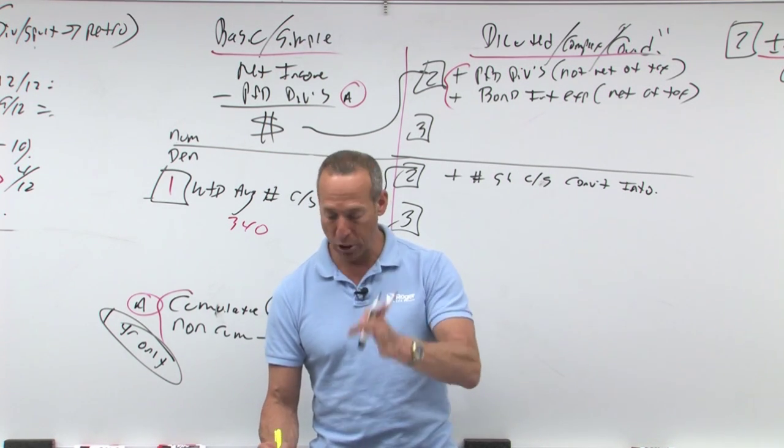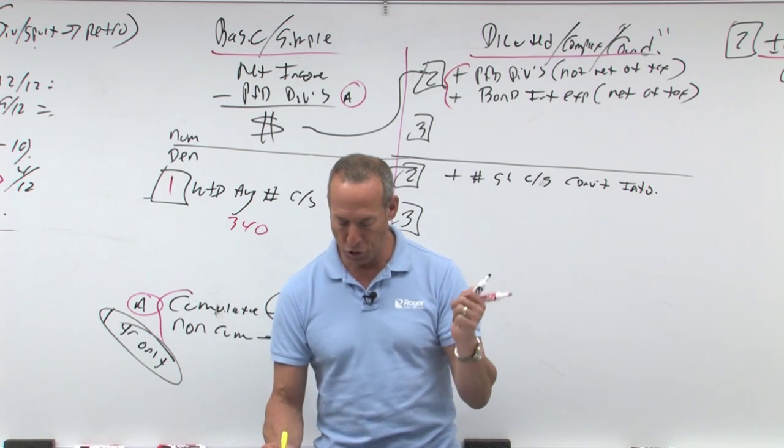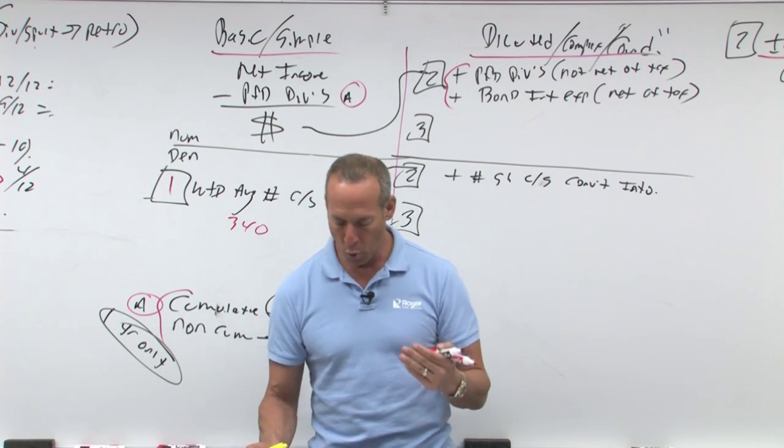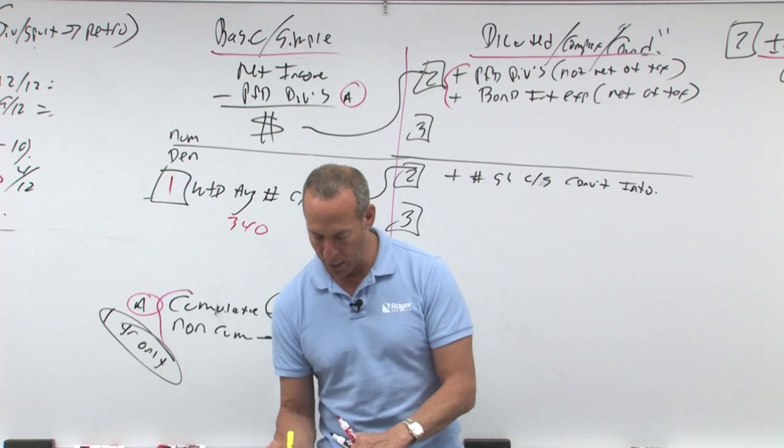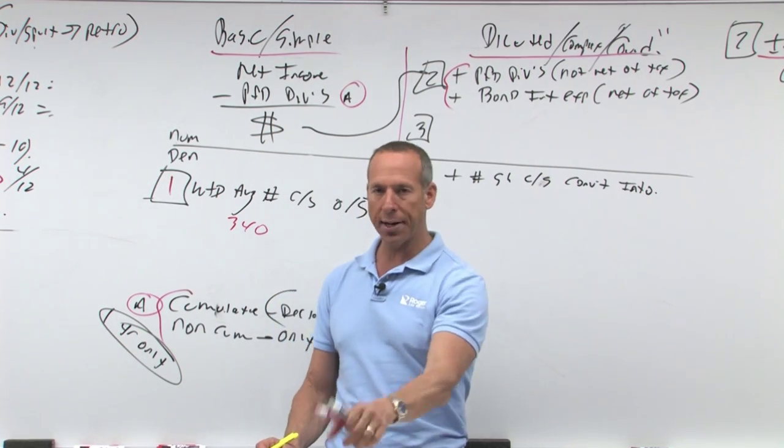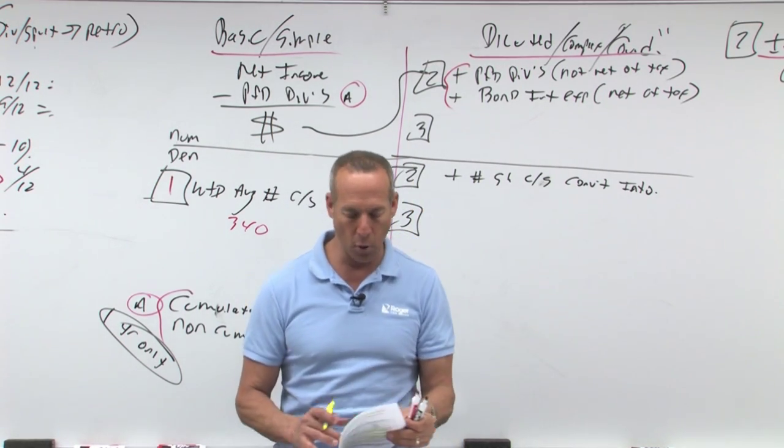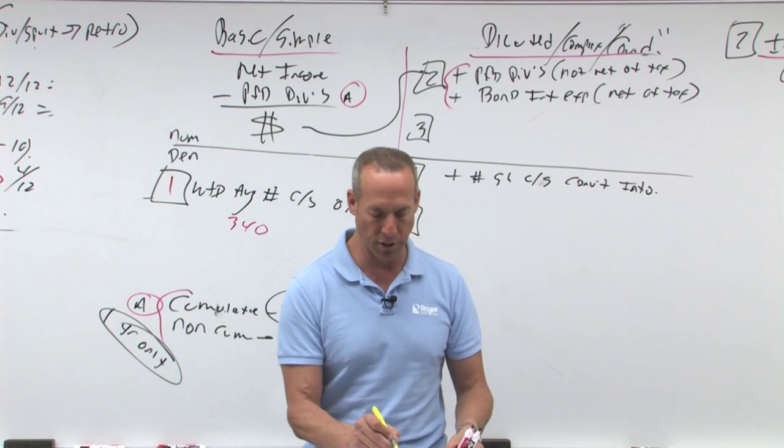To determine whether or not an item is anti-dilutive, each item is considered separately in sequence, from most to least dilutive. One would normally consider options and warrants first. So we kind of go in order: is this dilutive? No. Is this dilutive? Yes. Is this dilutive? And so on and so on.